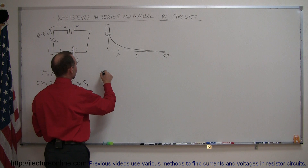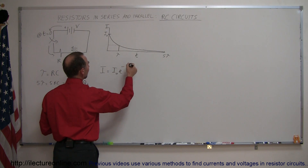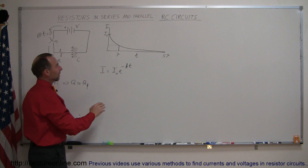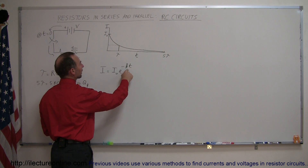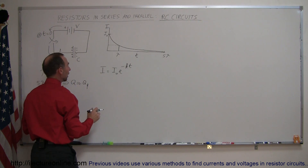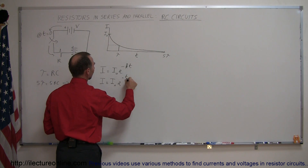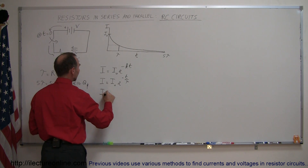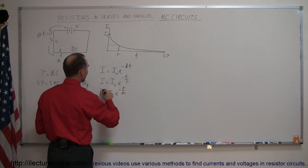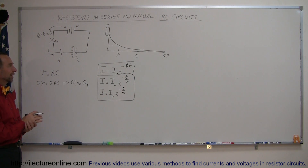We'd like to come up with an equation that defines that graph. The amount of current flowing would be equal to some initial amount i-initial times e to minus k times time. Notice that if time gets big, e to the negative large value becomes very small, and current will eventually drop to zero. The constant k is actually equal to one over RC, the time constant. So we can say the current is equal to i-sub-not times e to the minus t over tau, or equivalently i equals i-sub-not times e to the minus t over RC.